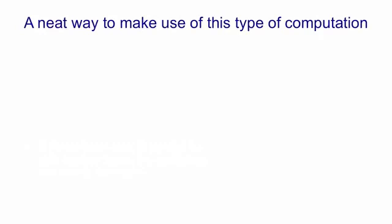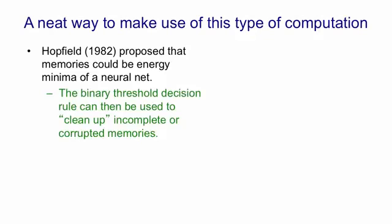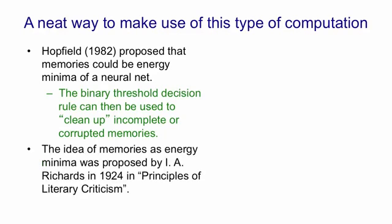Now what Hopfield suggested was that we could make use of this kind of energy-based model that settles to a minimum of its energy for storing memories. So he had a very influential paper in 1982 that proposed that memories could be energy minima of a neural net with symmetric weights. The binary threshold decision rule can then take partial memories and clean them up into full memories. So the memory could be corrupted by part of it being wrong, or part of it could just be undecided, and we can use the net to fill out the memory. The idea of memories as energy minima goes back a long way. The first example I know of is in a book called Principles of Literary Criticism by I.A. Richards, where he proposes that memories are like a large crystal that can sit on different faces.